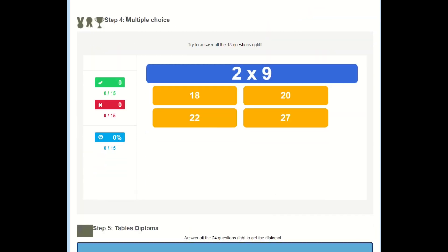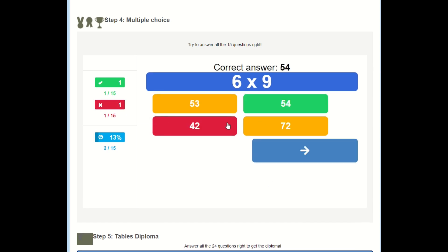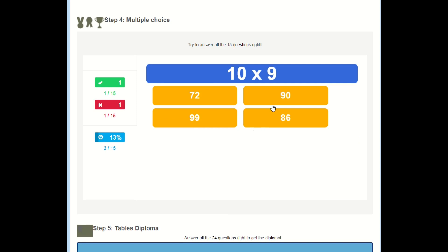On number four we've got multiple choice. We're going to have 15 questions to answer and we need to click the correct one. It's a little bit like hit the button. So two times nine is 18. I move on. Six times nine. Oh I think that's 42. Ah incorrect. Ten times nine is 90 and so on. And I'll keep doing that until I've got all 15 questions.